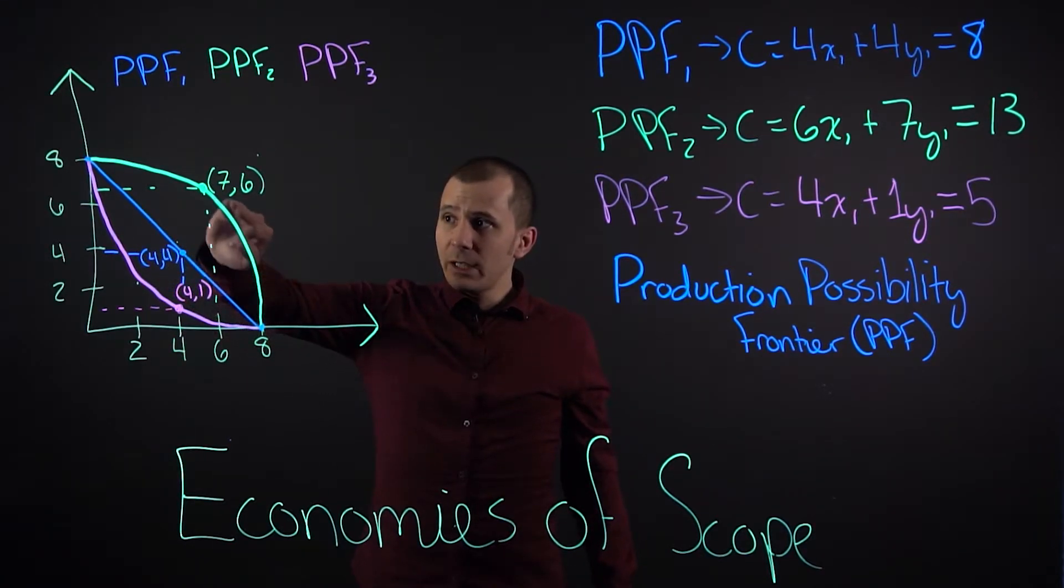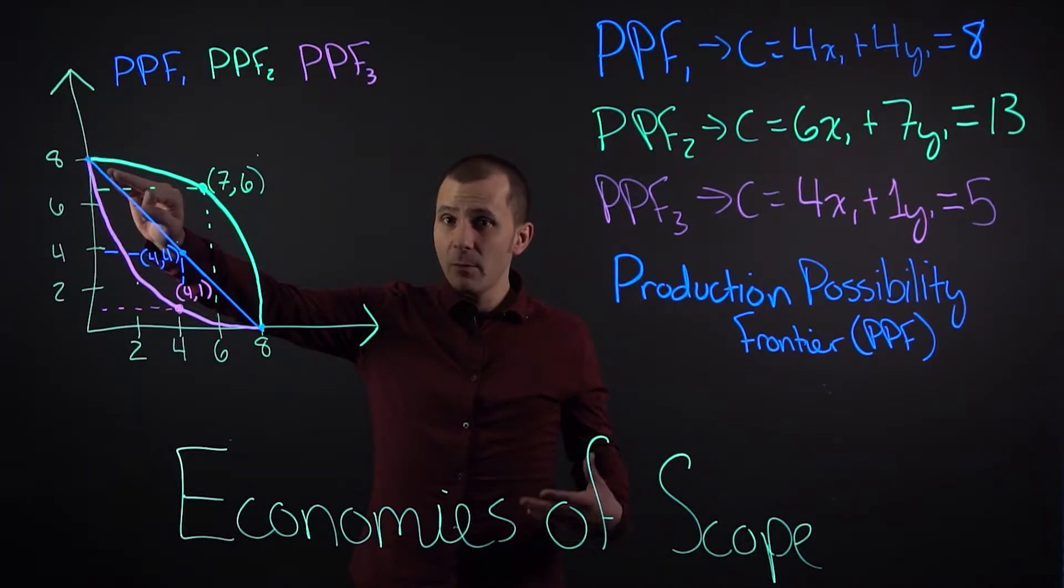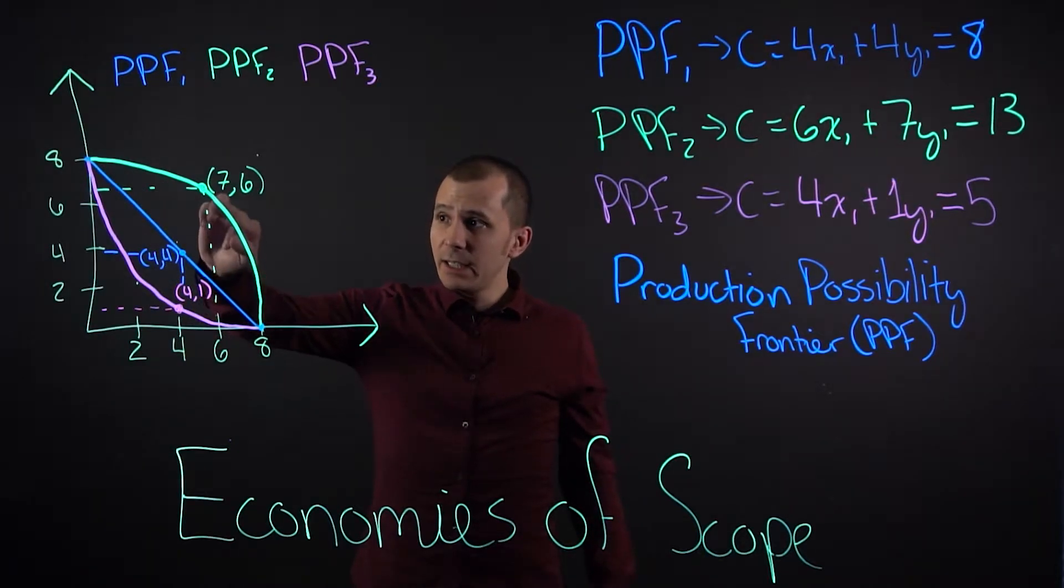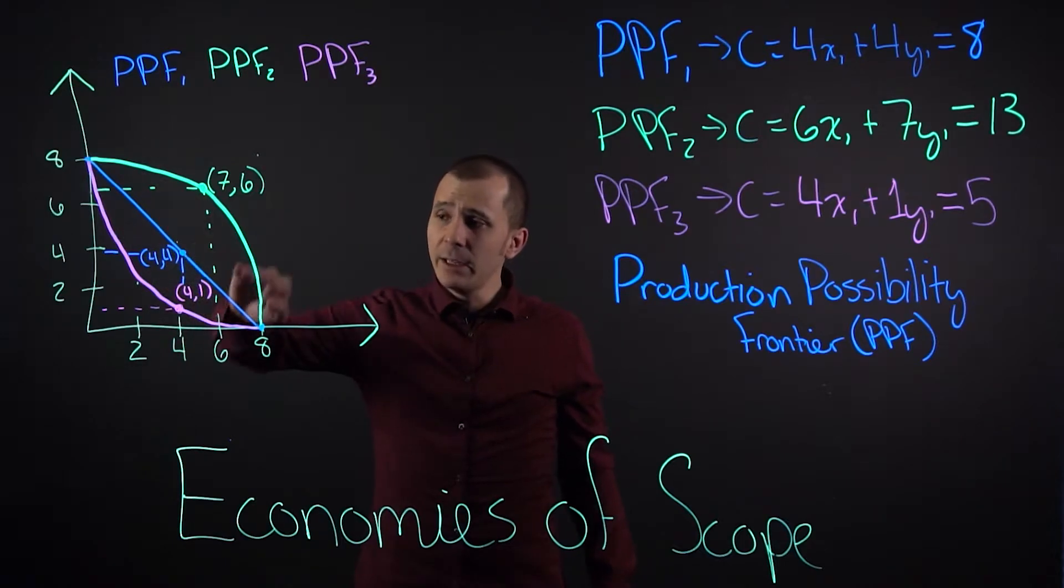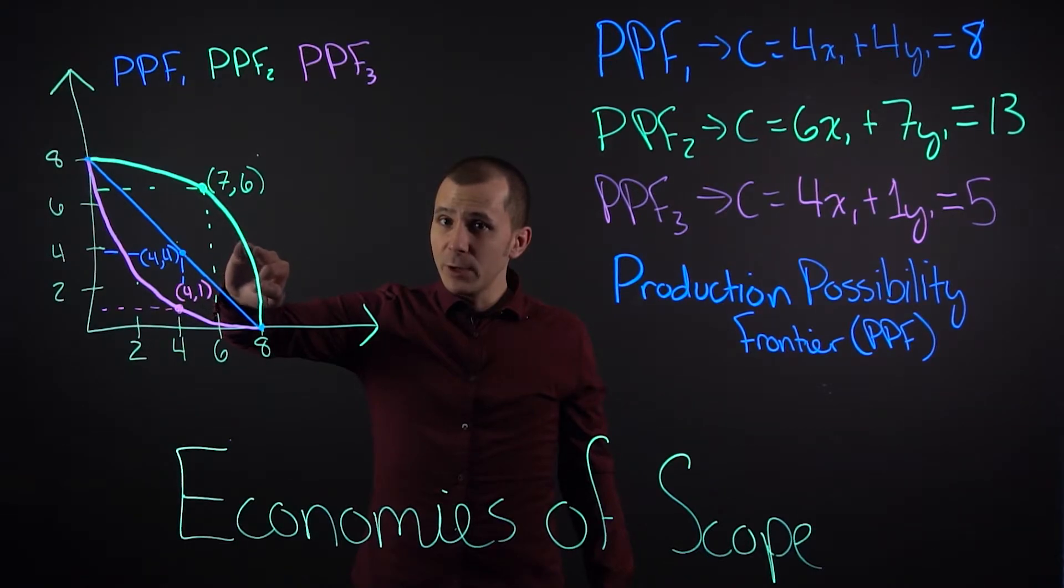This curved green line is an economy of scope company benefiting from multi-products. As you can see, the dot that moves along this means that for the production values on the X and Y axes, you might produce more Y but would have to produce less X for the same average cost.